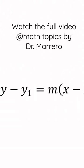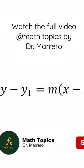Point-slope form: y minus y1 equals m times x minus x1. We have two elements here — one point, the x1 and the y1, which are the coordinates of the point, and the slope, which is m.